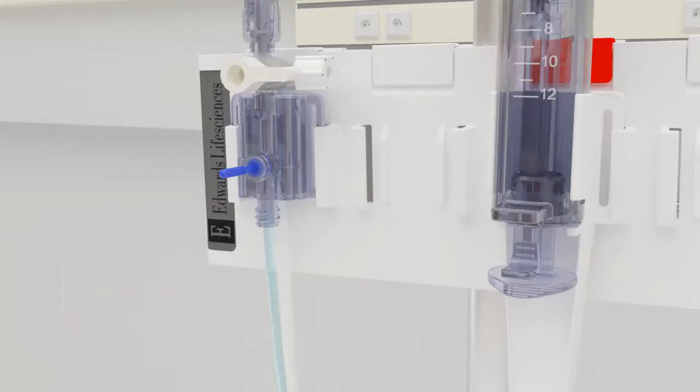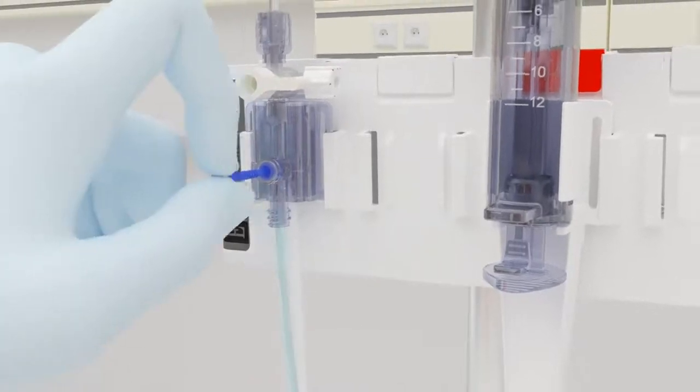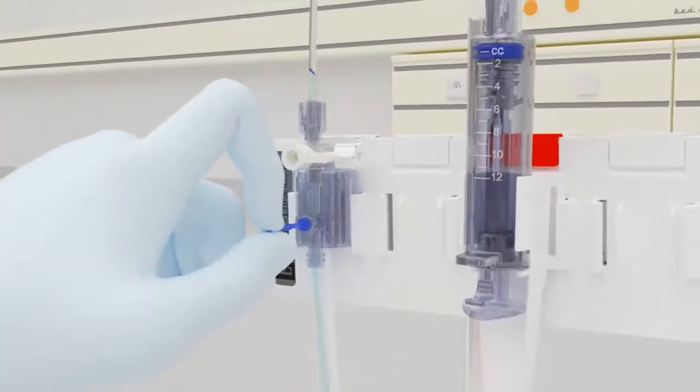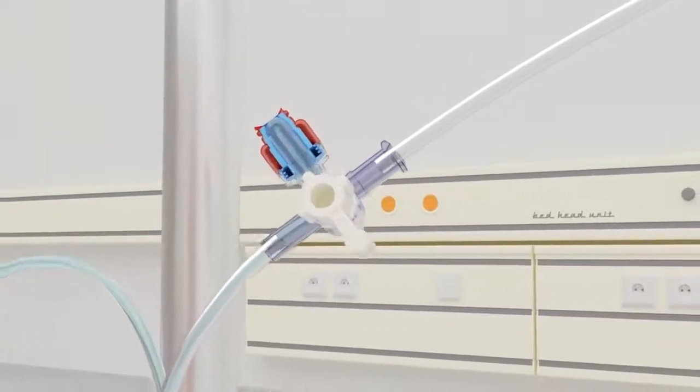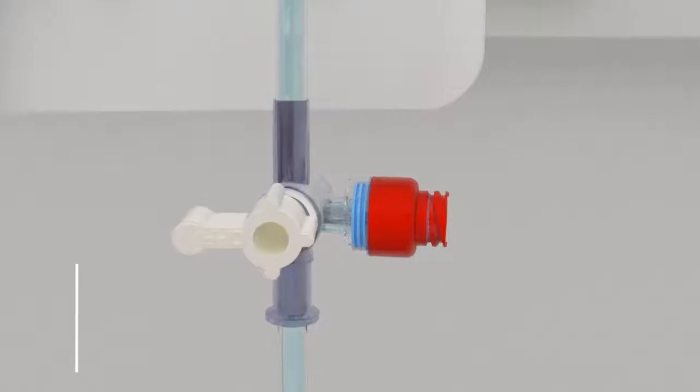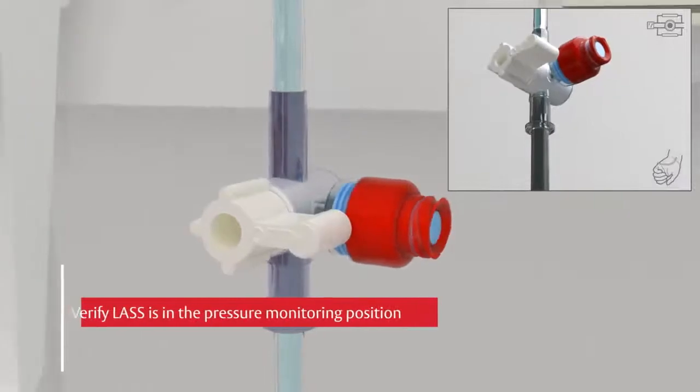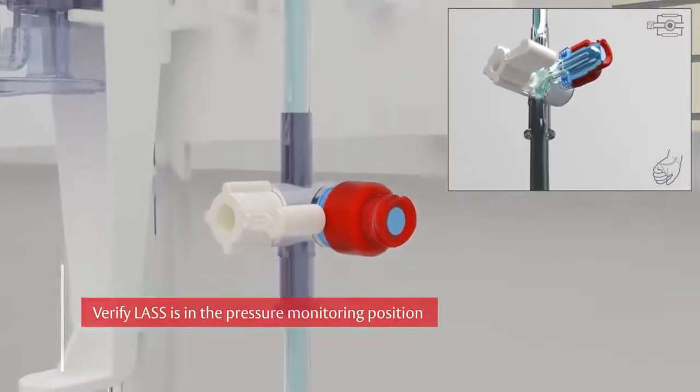Now provide flow by pulling the flush device of the Edwards TruWave disposable pressure transducer to deliver and remove air from the reservoir and each sample site in succession. Then set the sampling site to the pressure monitoring position.